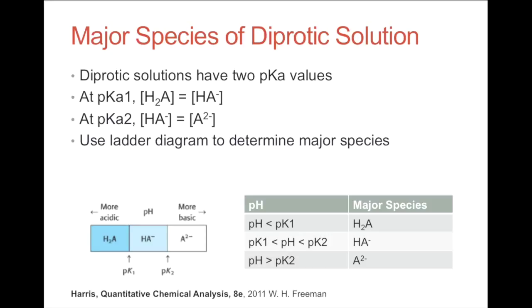To determine the major species, we use a ladder diagram. We take our pH and compare it to the pKa values. If the pH is less than pKa1, the major species is H₂A. If the pH is between pKa1 and pKa2, then the major species is HA⁻. You just take your pH, determine where it lies in the ladder diagram, and that is your major species.